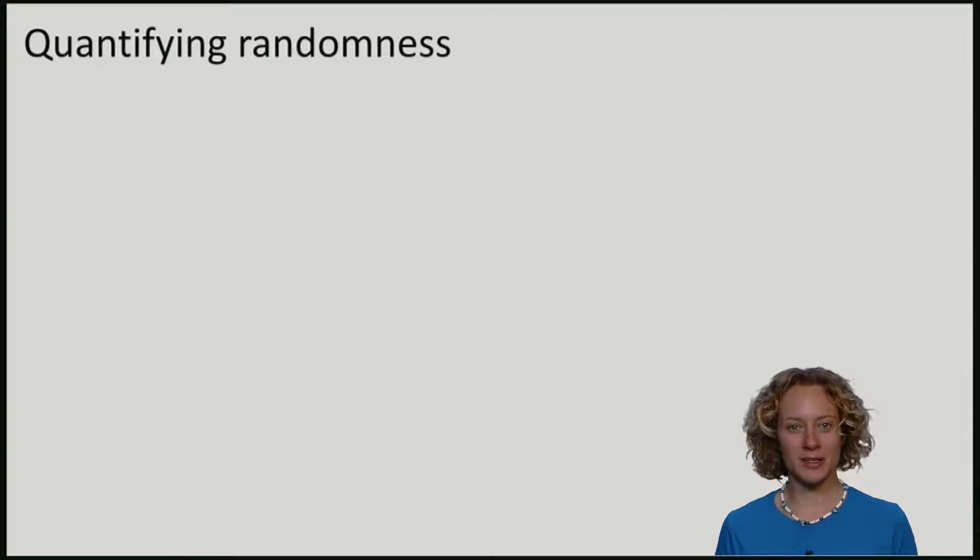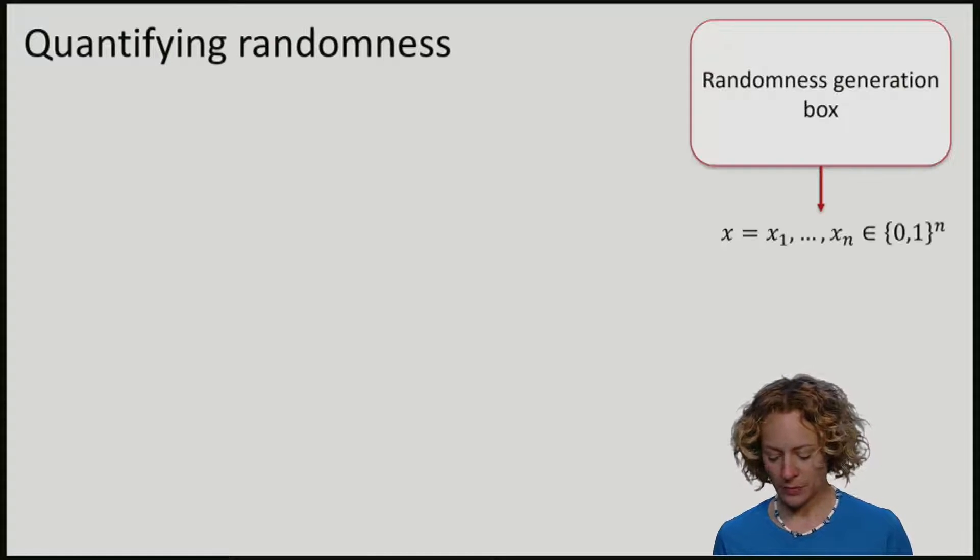We've already seen what it means for Eve to be ignorant about a key. The key was uniformly random and uncorrelated from Eve. Let's suppose now that we have a classical string, a key for example k or string x, produced by a randomness box that is not uniformly random.